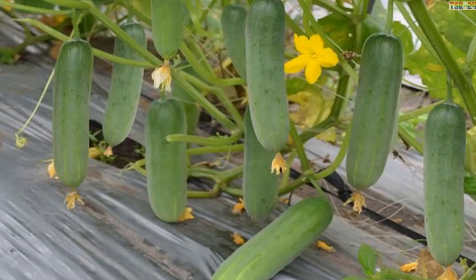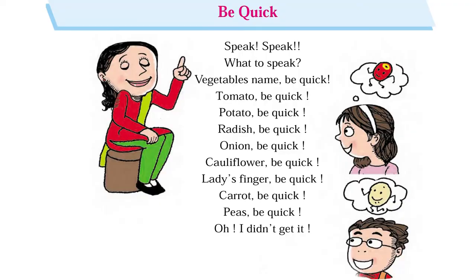Cucumber — do you like cucumber? Cucumber also grows on the plant. There is one vegetable which is bitter in taste — karela, bitter gourd. Do you like karela? No? But you must eat karela. If there is a worm in your stomach, this bitter gourd will kill all the worms.